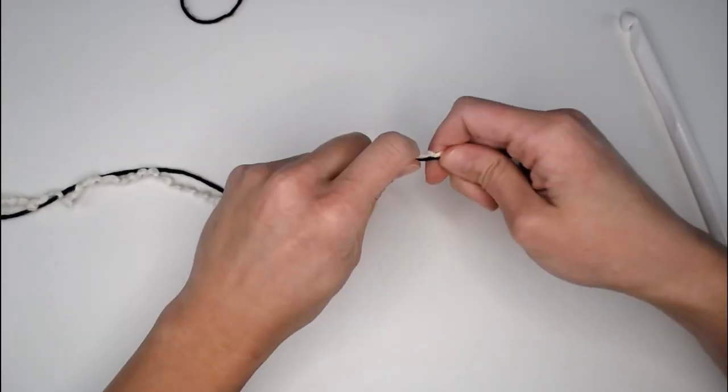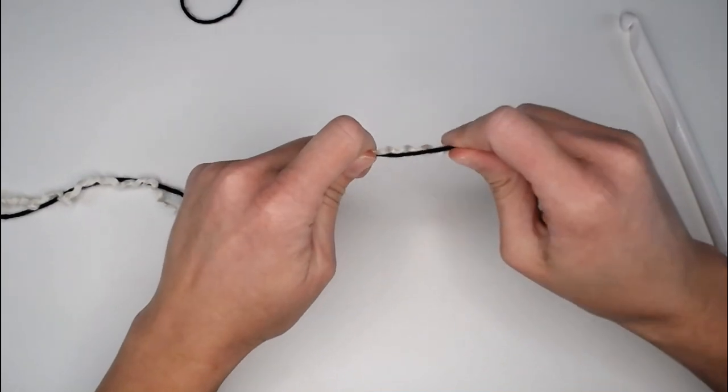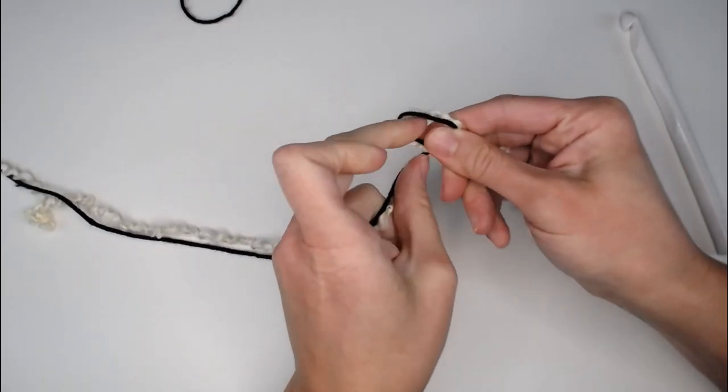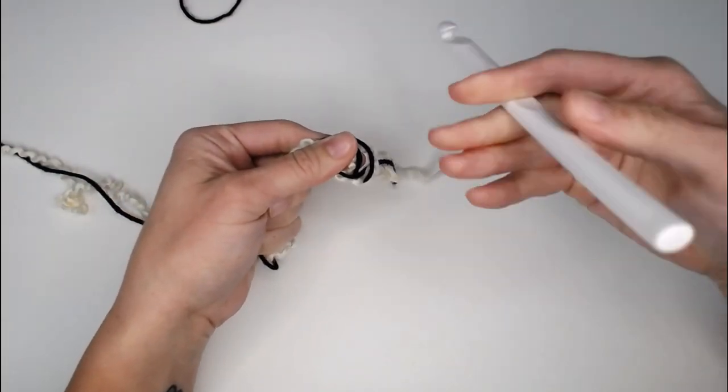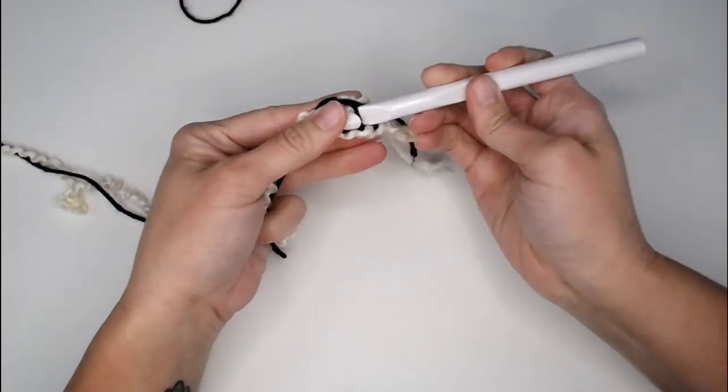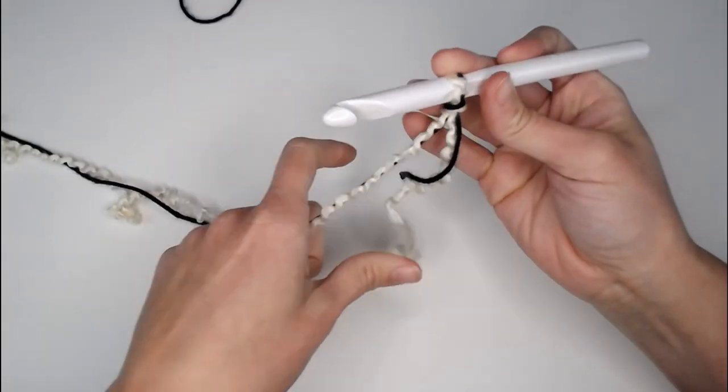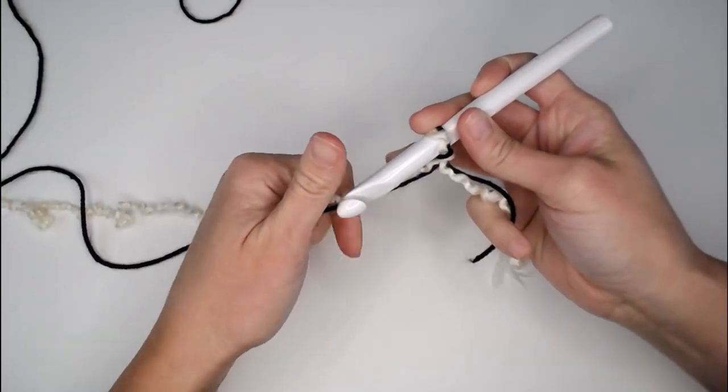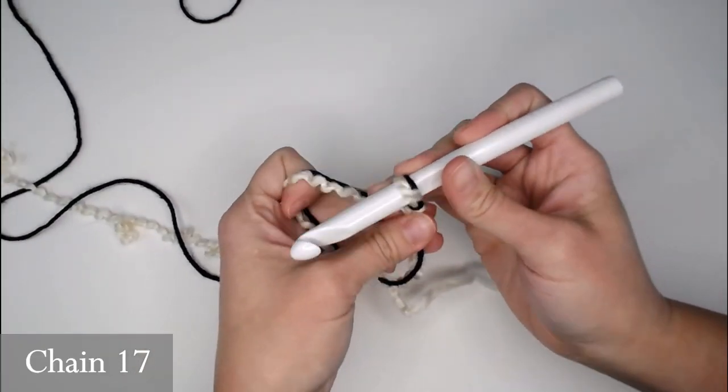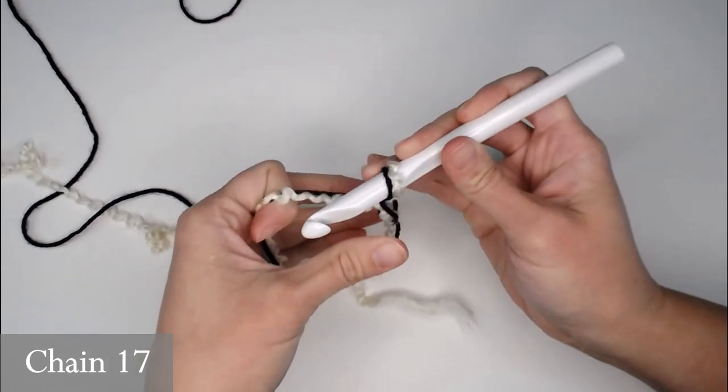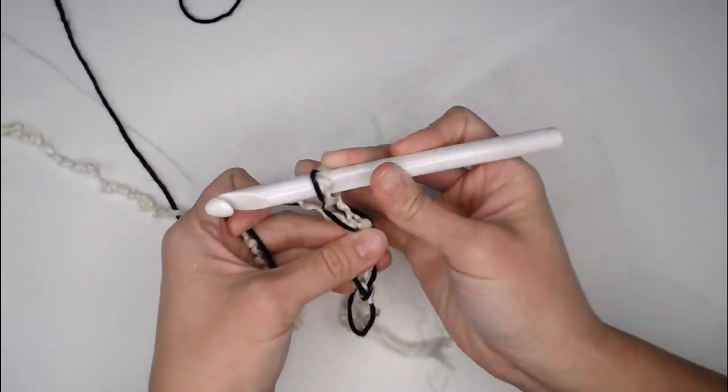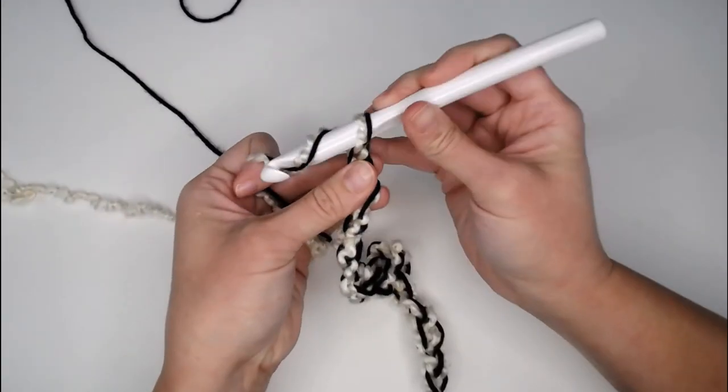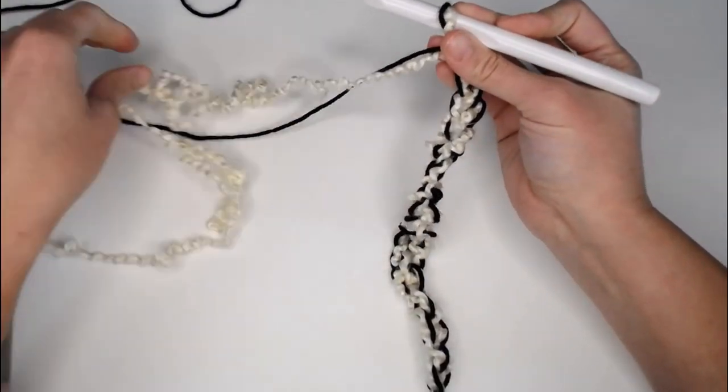So we are going to put them together, treat them like they are one. Go ahead and create your slipknot. Take your crochet hook. Alright, we are going to start by chaining 17 chains. 1, 2, 3, 16, 17. Fabulous!